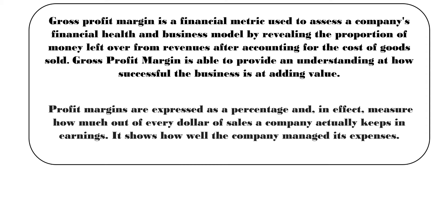The profit margin measures how much of every dollar of sales a company actually keeps in earnings. It shows how well the company has managed its expenses — how efficient they are at turning sales revenue into profit. If their profit margin is low but their gross profit is high, you can look more closely at the expenses, as it may indicate an issue with their costs.